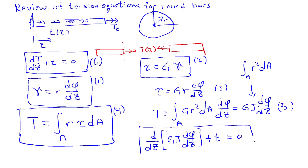So this gives me a second order ODE that I can solve for the rotation. If I have solved for the rotation, then I can use relationship 5 to get the torque, and I can work my way backwards to find out any other information I'd like to know about the system here. So to solve this equation, we need boundary conditions.